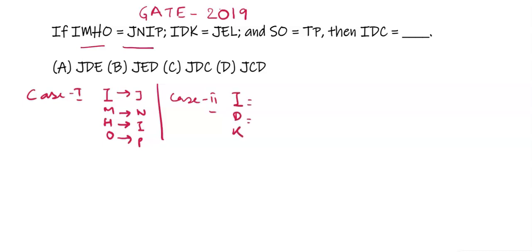Next alphabet of I is J, next alphabet of D is E, and the next alphabet of K is L.